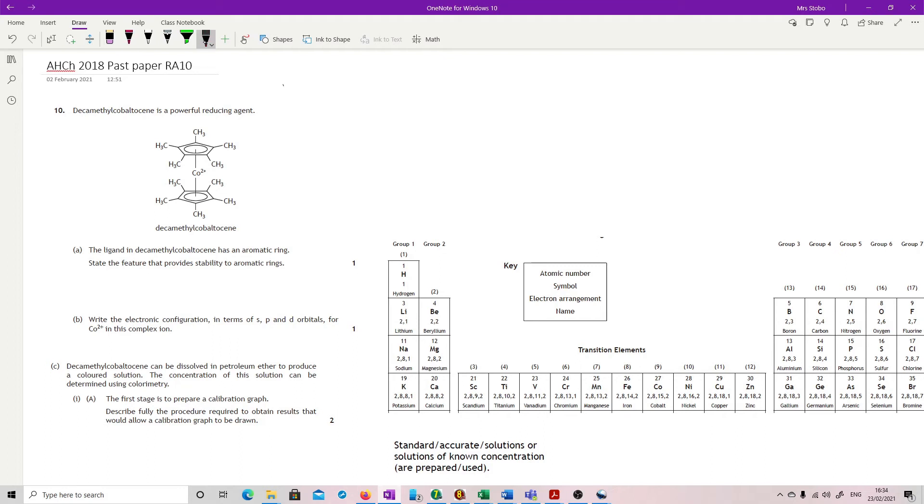Question 10. I'm not even going to attempt to say the word - it's a powerful reducing agent, and then we have a nice picture of it. The ligand has an aromatic ring. State the feature that provides stability to aromatic rings. It's the delocalised electrons. That's all the places you're going for that one.